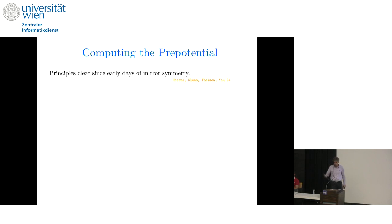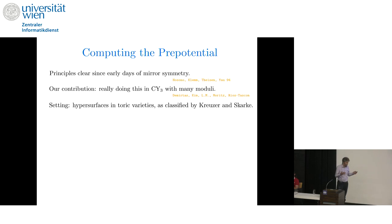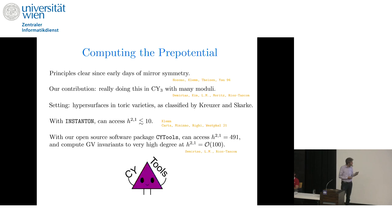So how do we do that? Well, the principles for how to do this have been clear for decades. Our contribution is really doing it in Calabi-Yau three-folds with many moduli. Specifically, we do this in hypersurfaces in toric varieties as classified by Kreuzer and Skarke. So with Klemm's package Instanton, one can carry out the mirror map and compute the periods up to a number of complex structure moduli, let's say 10, if you work hard. With our open-source software package CYTools, written by my students Mehmet Demirtas and Andres Rios-Tascon, we can access anything in the Kreuzer-Skarke list up to the maximum available, 491 complex structure moduli. And as I'll show you, we can compute GV invariants to extremely high degree, even in high-dimensional moduli spaces. So this is the key capability that enabled the work.